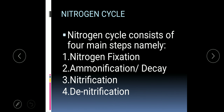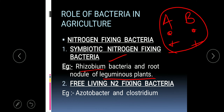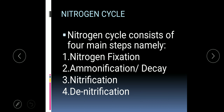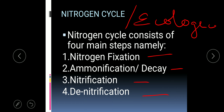The other type is free-living nitrogen-fixing bacteria, which is found in the soil itself. This bacteria converts atmospheric nitrogen into either ammonia, nitrites, or nitrates. Examples of these bacteria are Azotobacter and Clostridium. We now move to the nitrogen cycle, and each step of the nitrogen cycle is helped by different categories of bacteria — this is the ecological importance of bacteria.